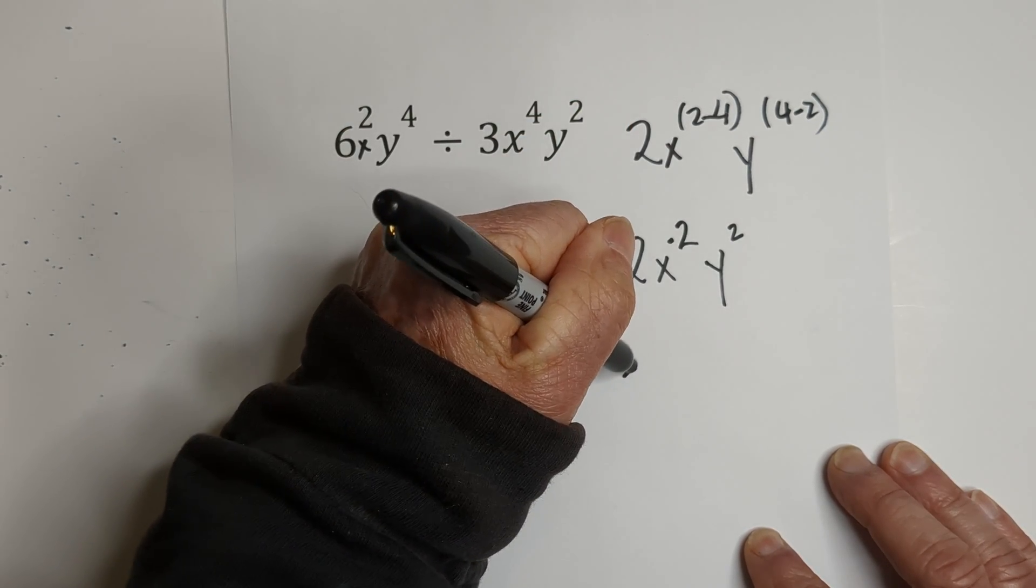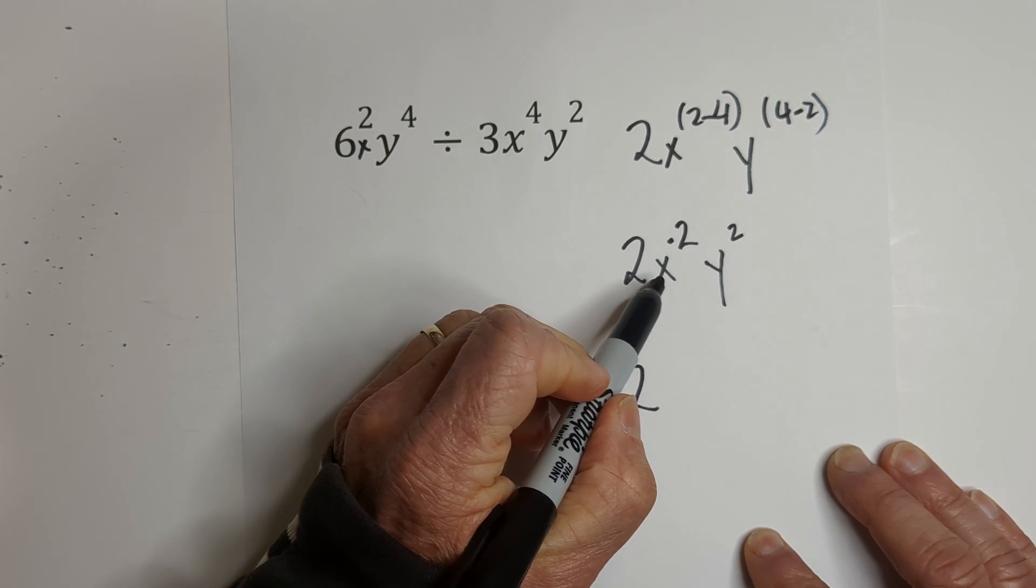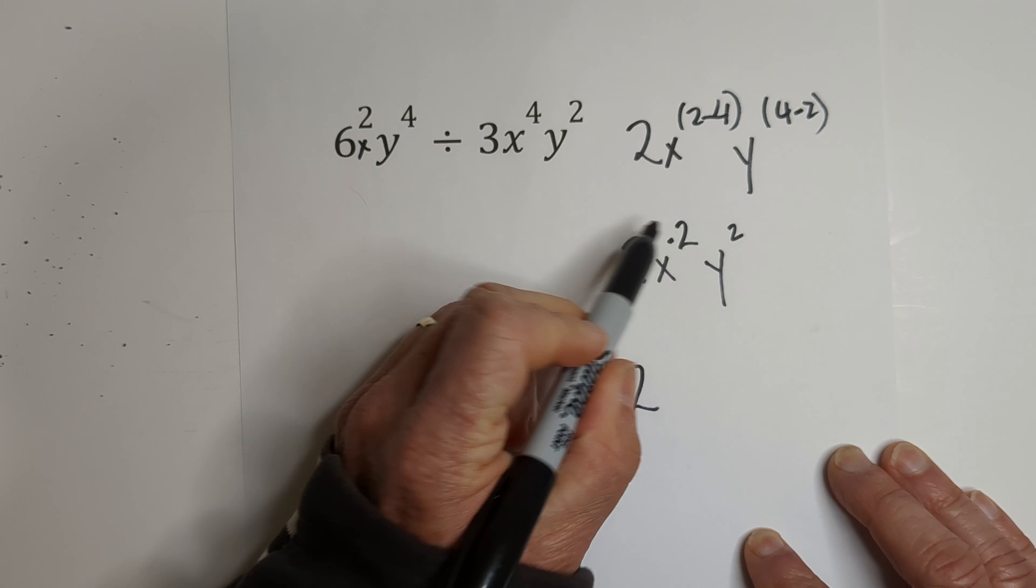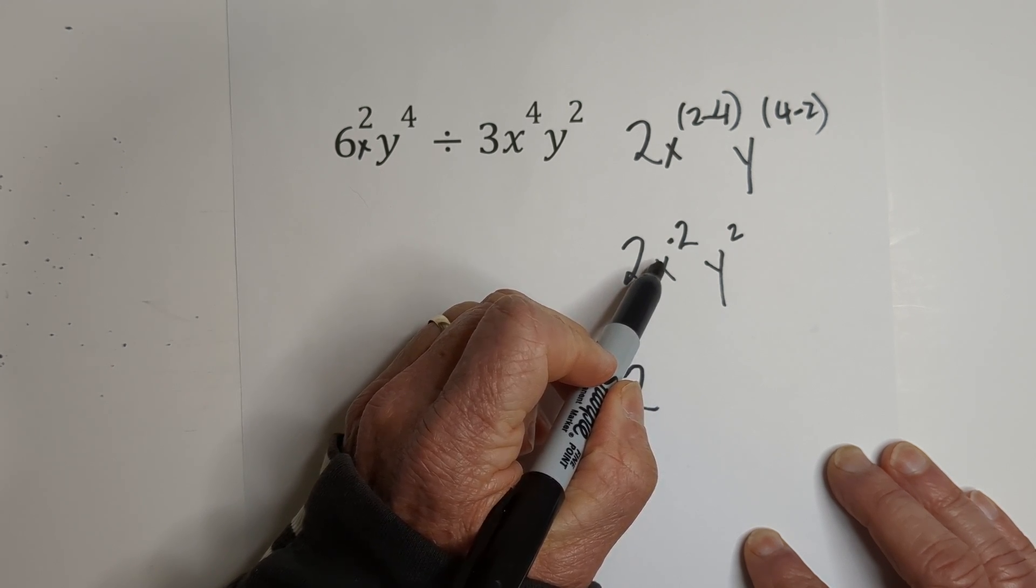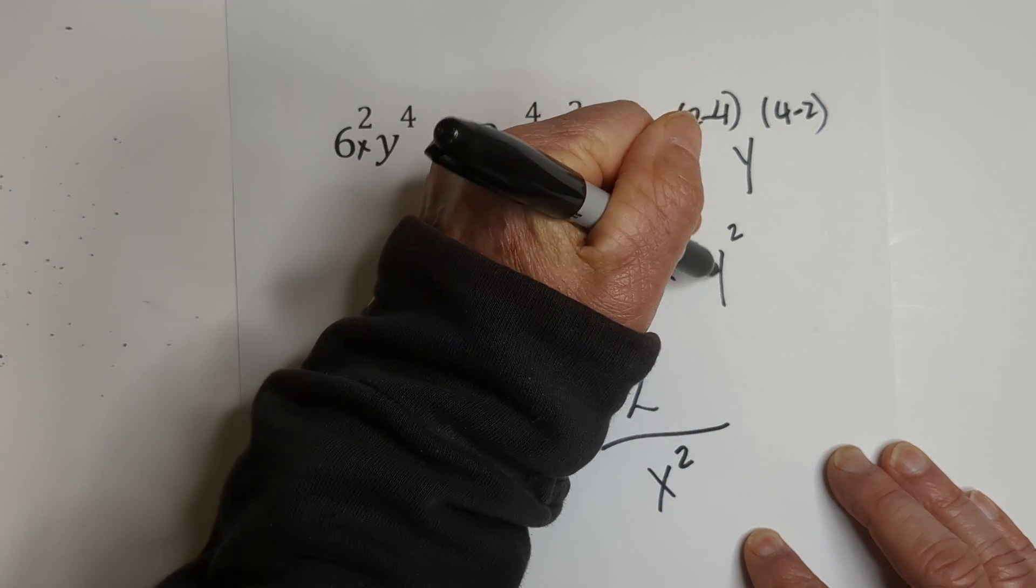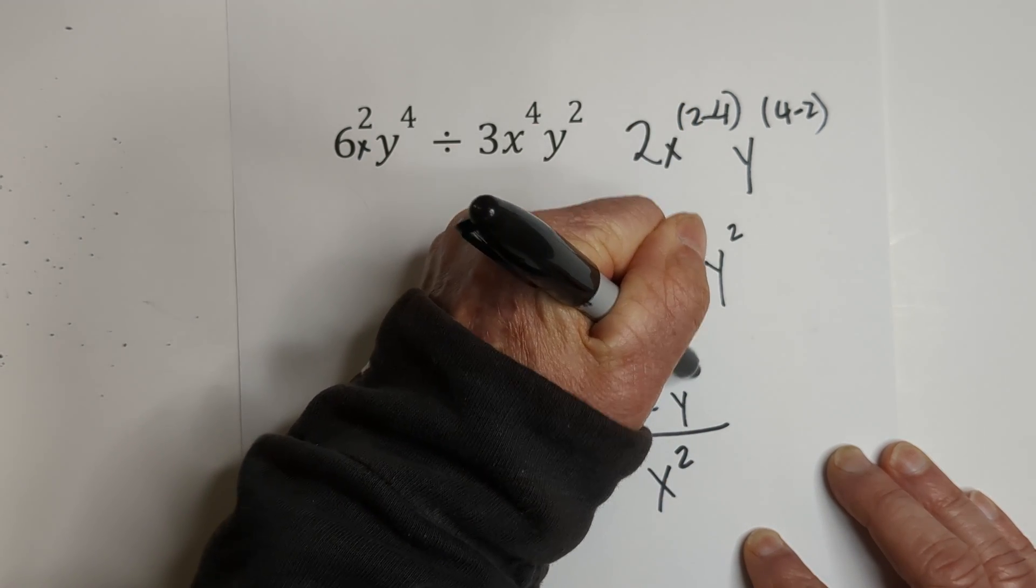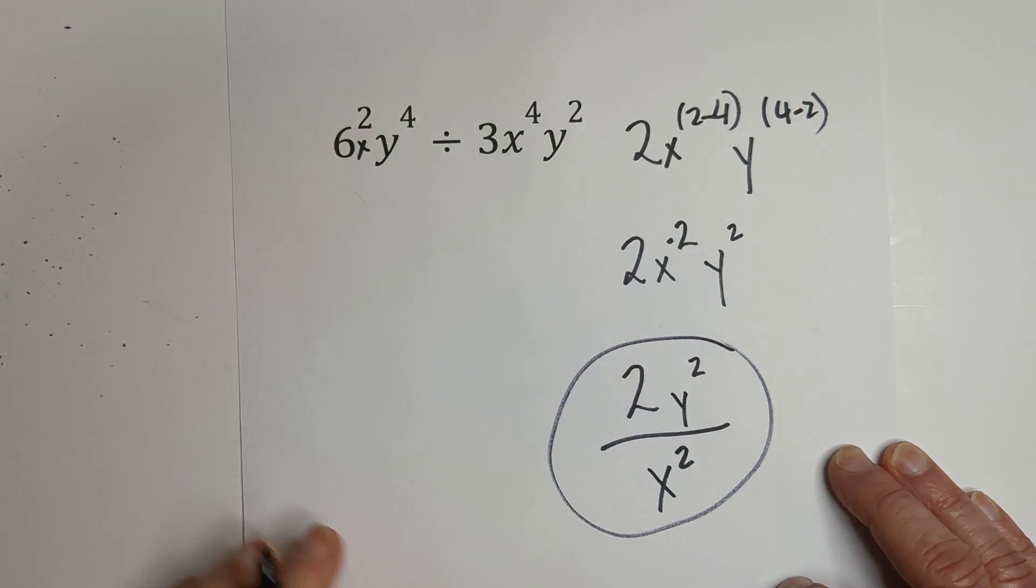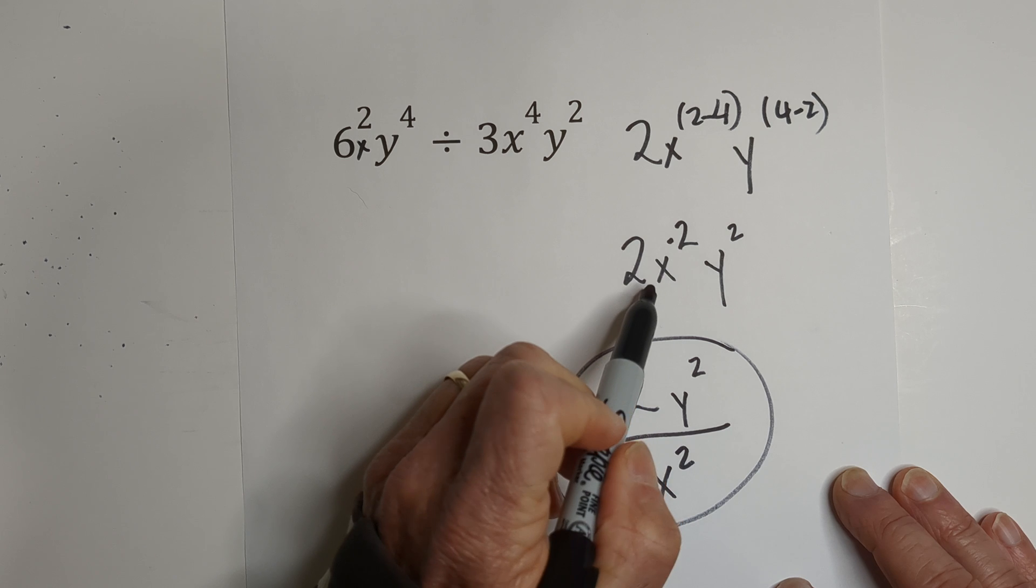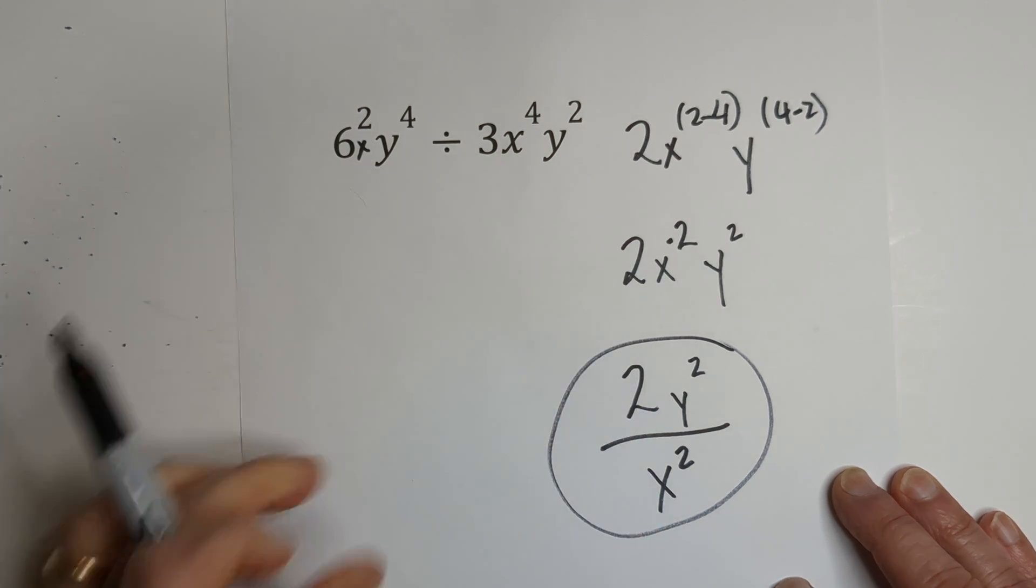So now we need to write it in a positive format. So we're going to write the 2. Now, a lot of people would think the 2X is to the negative squared. But it's only the X. So we're going to write the X on the bottom. And then this Y is positive so it goes on the top. So there it is simplified. Again, it's only connected to the X, not the 2.